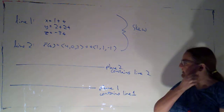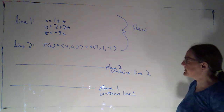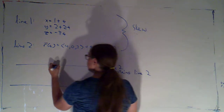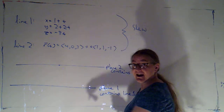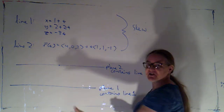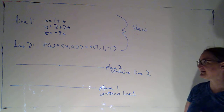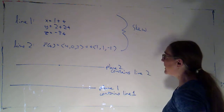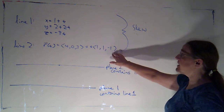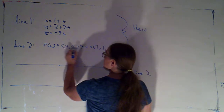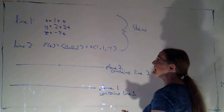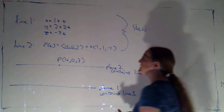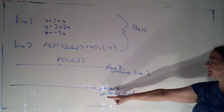We've discussed how we find the distance from a point to a plane. For the distance between two parallel planes, basically all I do is pick a point on one plane and find the distance from that point to the other plane. So finding the distance between two parallel planes amounts to finding the distance between a point and a plane. I'll pick the starting point of line two, which I'll call point P — that's (4, 0, 3).